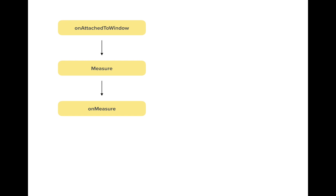At a single level there can be multiple children for a particular parent, but deep down it happens in a tree. Anytime a parent view wants to draw its children, it needs to know where its children want to get placed and what are their desired measurements — height and width. At this moment the measure call is happening: parent views want to understand their children's desired specifications. Then for each child, the onMeasure call gets invoked, where every child lets its parent know its specifications and where it wants to get placed in the view.